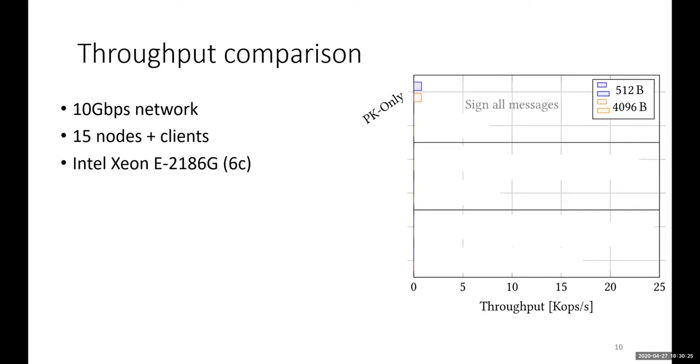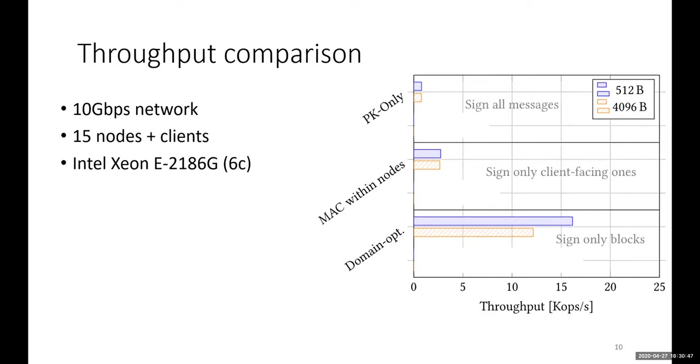What we see is that with signatures only, the system has very low throughput, in the order of 1,000 operations per second. If we replace signatures in messages sent between consensus nodes with MACs, there's a significant bump in performance. If one optimizes for the domain by removing signatures from client-facing operations, performance increases significantly. Here we already see a difference in throughput for small and large messages. For the first two cases, there's no difference in terms of message sizes because everybody is so compute-bound.